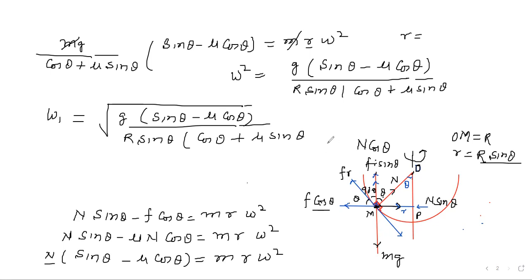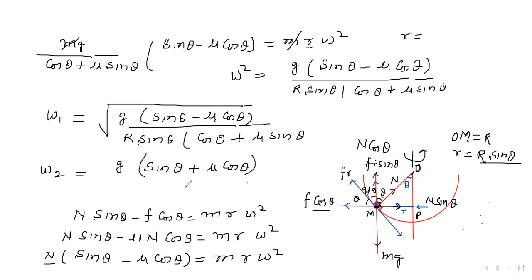Now suppose the angular frequency is increased so that the block has a tendency to move upward. In that case, friction acts in the downward direction. We can replace μ with −μ to get the second frequency: ω₂ = √[g(sin θ + μ cos θ) / (R sin θ (cos θ − μ sin θ))]. This is the upper limit.